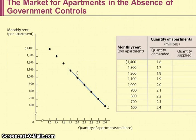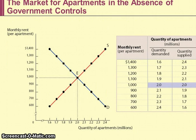Let's look at the market for apartments in the absence of any government controls. This data is from the textbook as an example. The equilibrium price for an apartment in New York City is $1,000 per month, and two million apartments would be rented at market equilibrium. Anyone who's been to New York City knows $1,000 a month is very low — it would probably be four or five times that — but we'll go with the book's data.